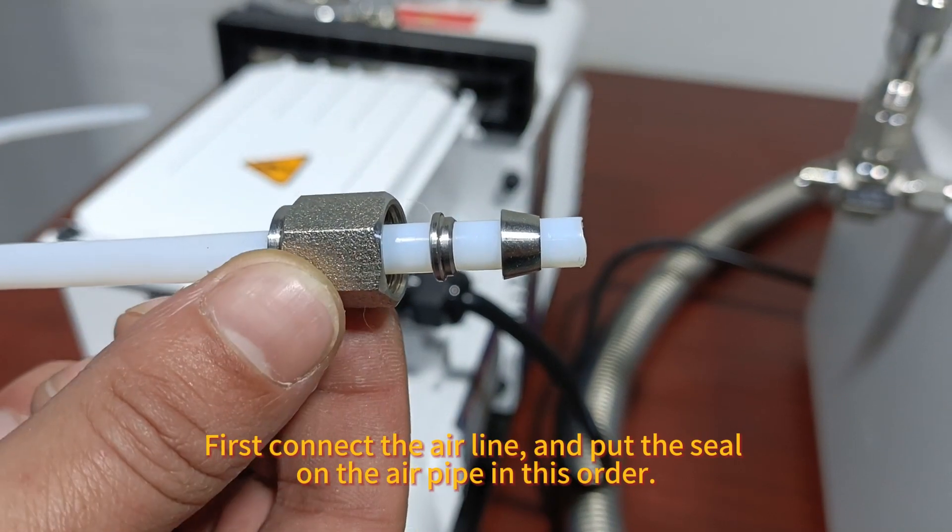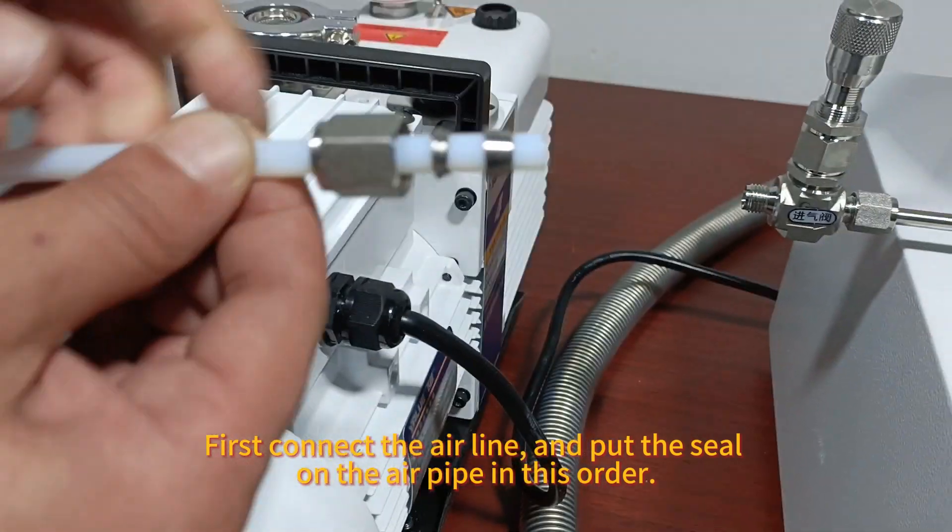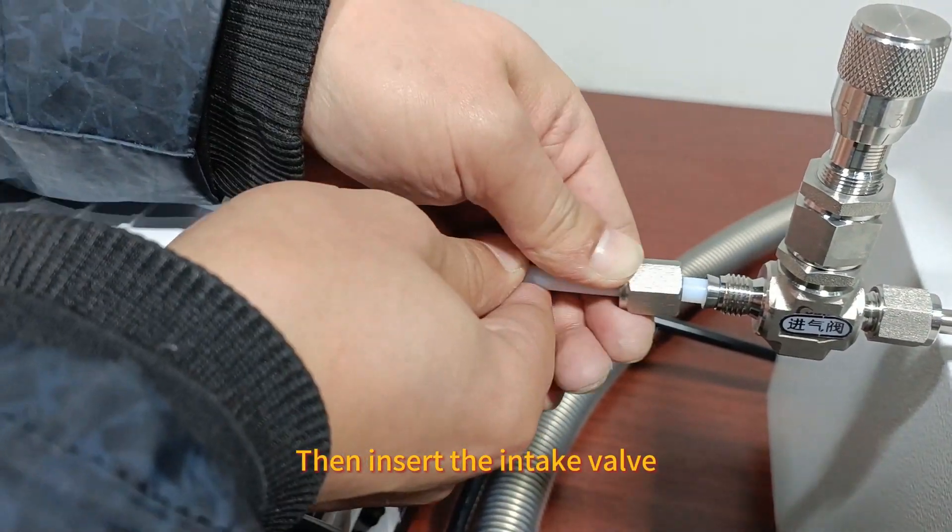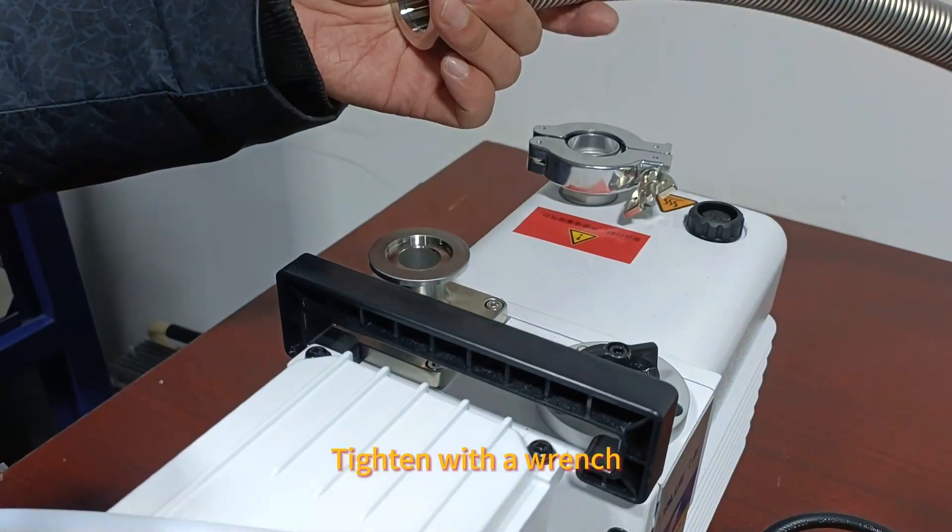First, connect the airline and put the seal on the air pipe in this order. Then insert the intake valve and tighten with a wrench.